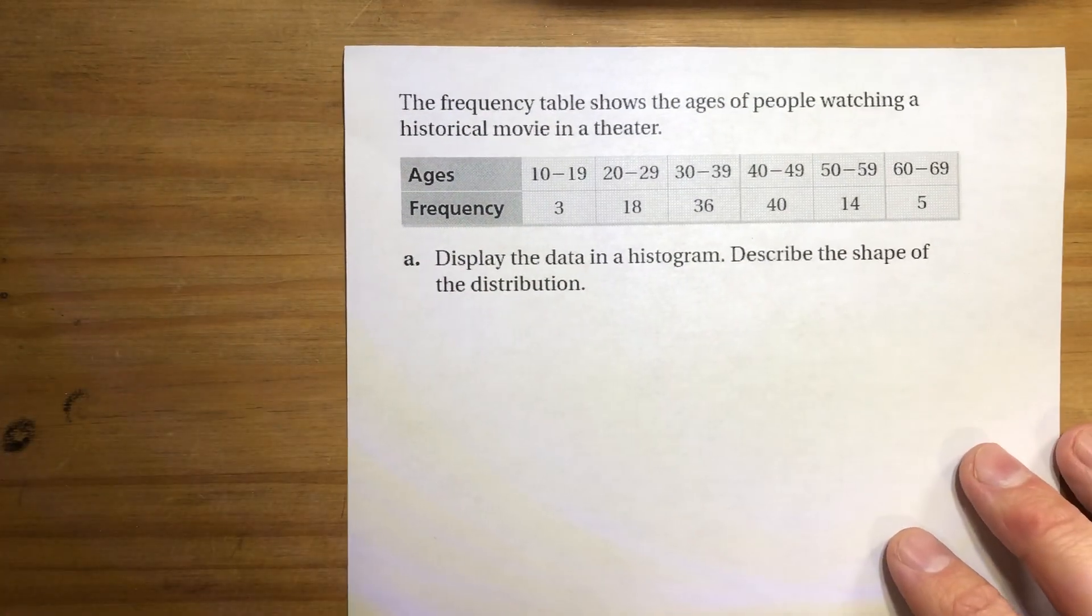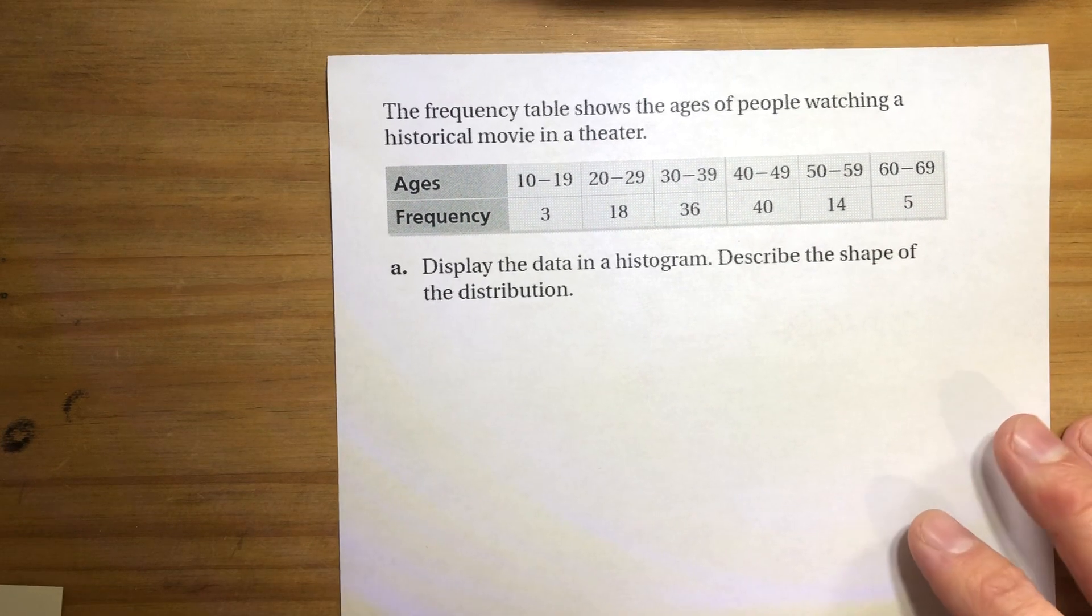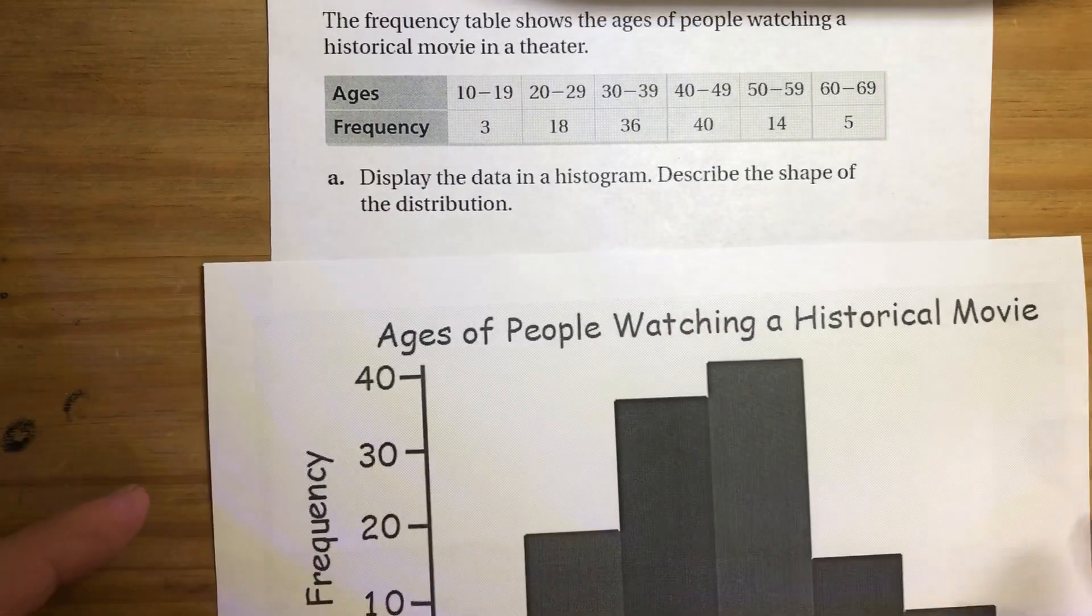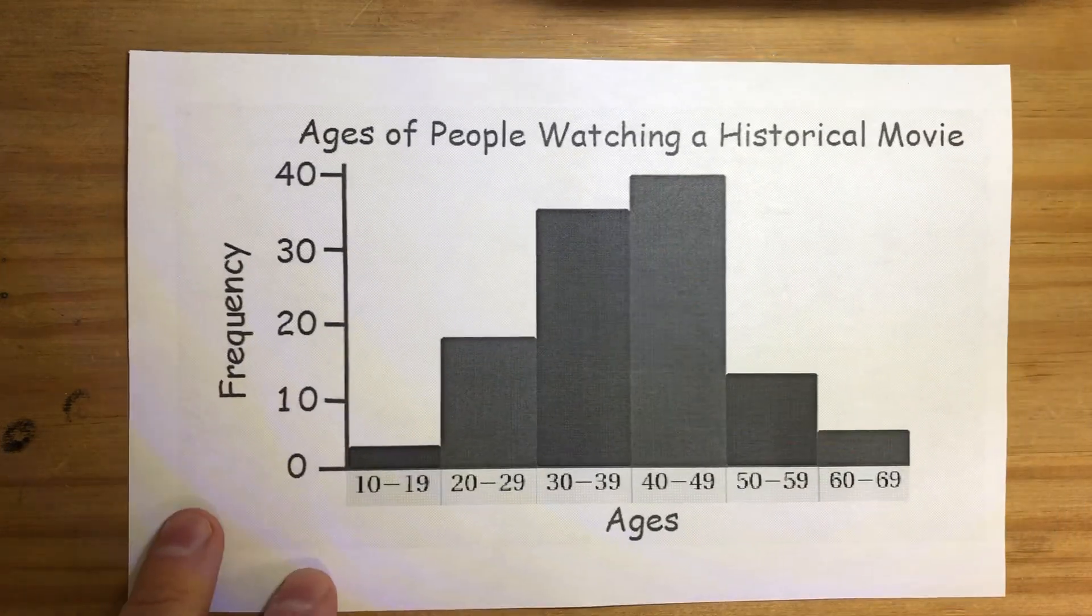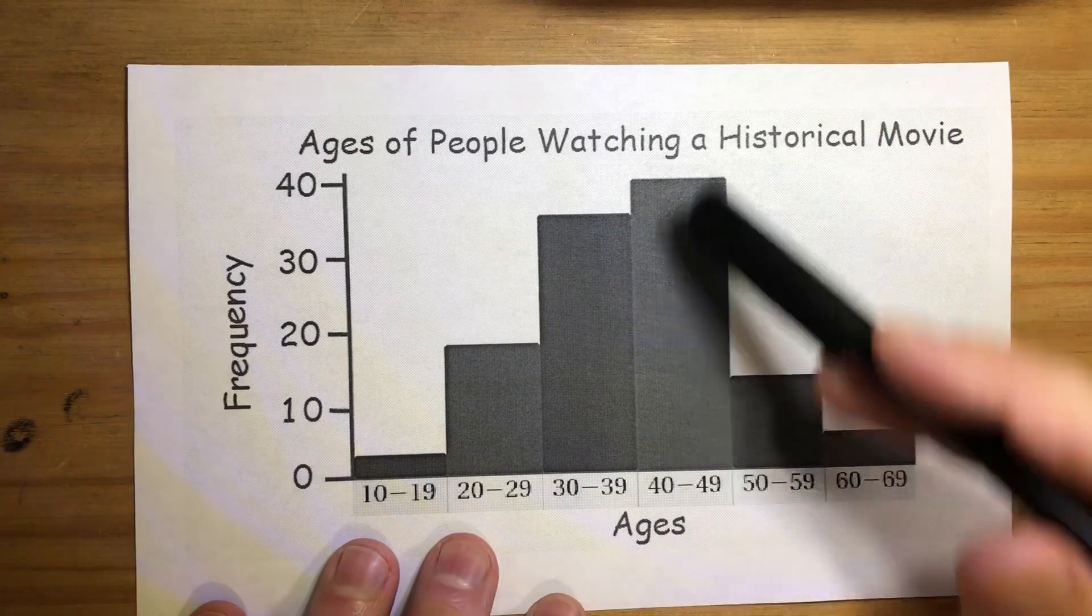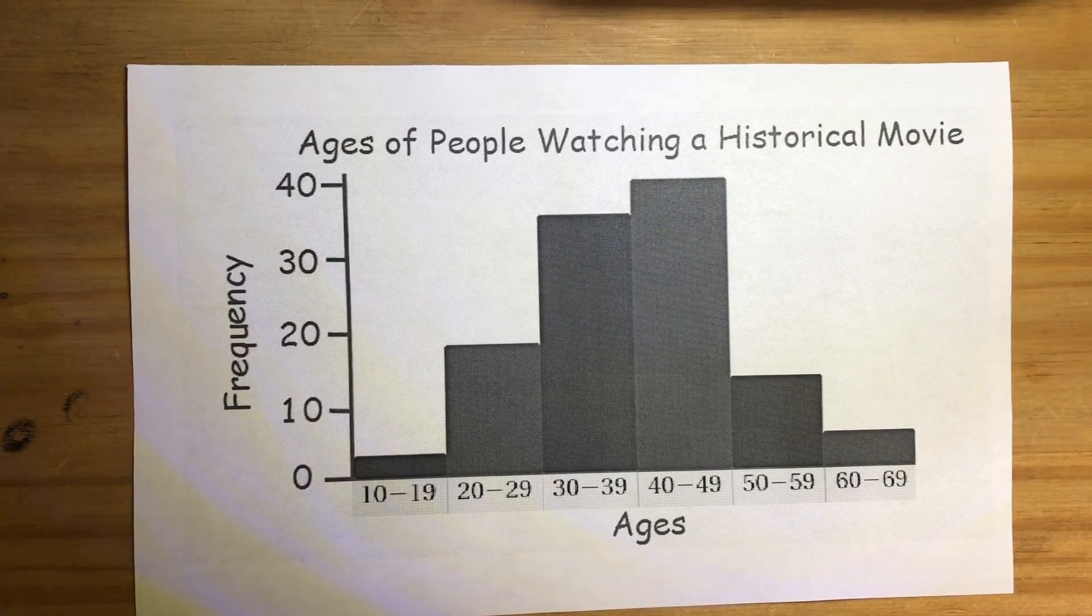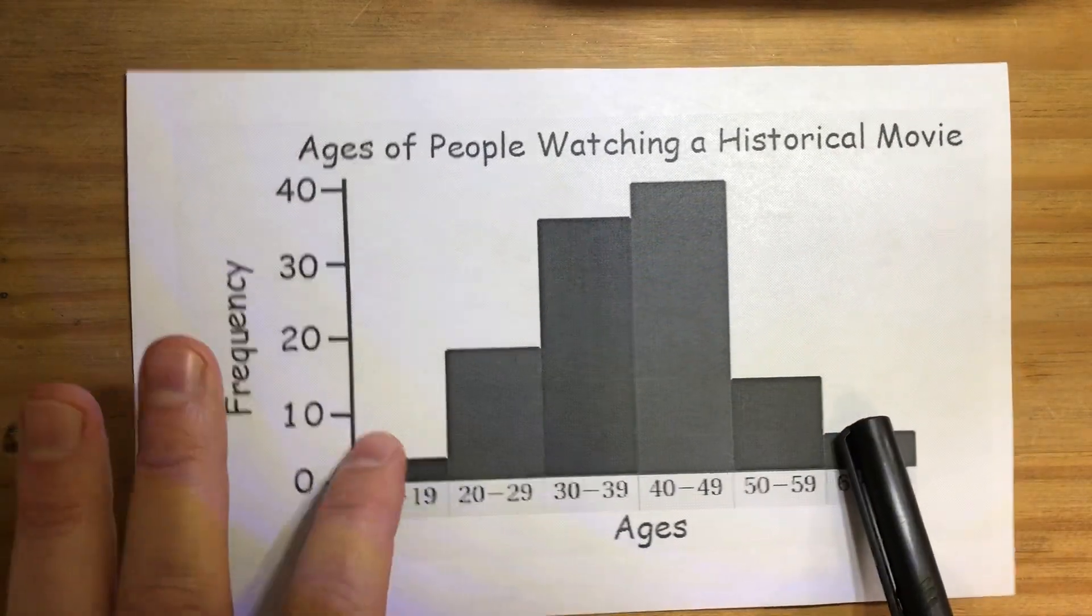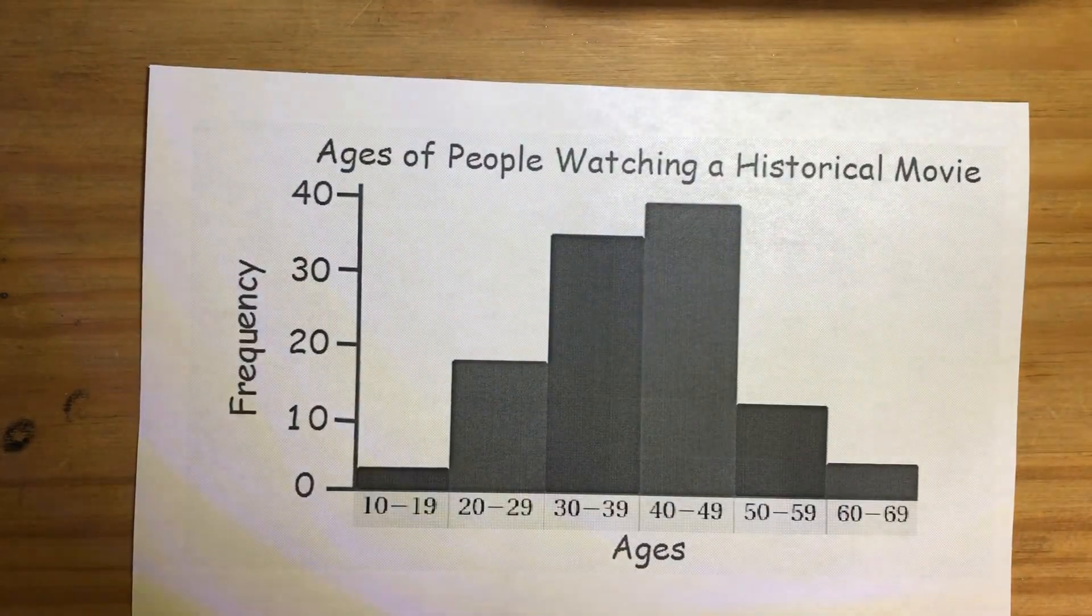So this frequency table shows the ages of people watching a historical movie in a theater. They want you to display the data in the histogram. Now, you don't need to worry about that. I've done it for you. But let's just take a look at how that data looks now that it's organized. You can see, I can see just where the data clusters, and I can see that this data is pretty much symmetric, because although this is a little taller than this, this is a little taller than this, and this is a little taller than this. So it's pretty balanced with the majority of the data clustering in the middle there.